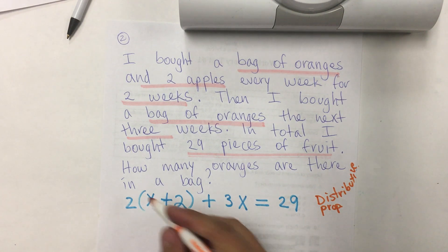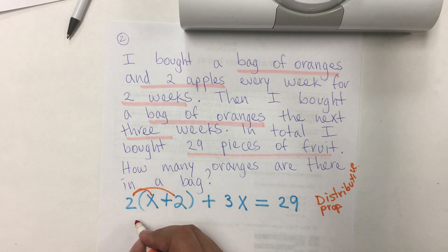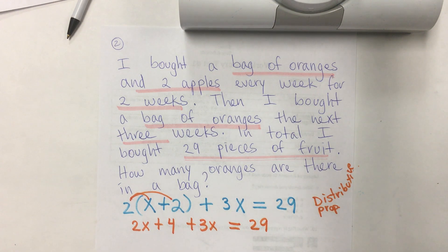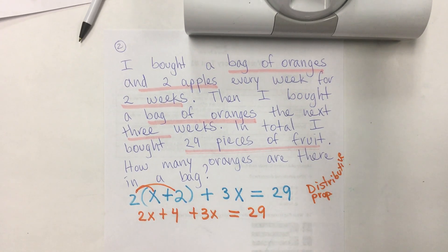So, now, we're going to do distributive property. I do distributive property. And, so, it's 2 times x and 2 times 2. So, 2 times x is 2x. 2 times 2 is 4. I bring down the 3x. And, equals 29. Now, after I do distributive property, I'm going to combine like terms.